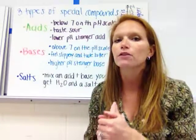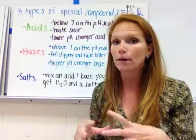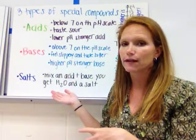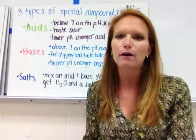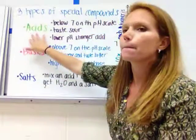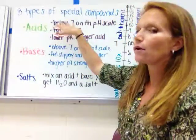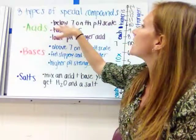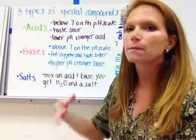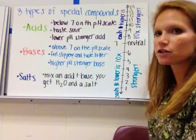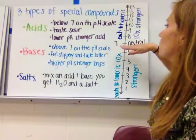These bonds form three types of special compounds. The first is an acid — a chemical that has a pH below seven. Let's look at the pH scale: seven is neutral, which is pure distilled water. It's not an acid or a base.